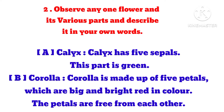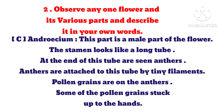B. Corolla — the corolla is made up of 5 petals which are big and bright red in colour. The petals are free from each other. C. Androecium — this part is the male part of the flower. The stamen looks like a long tube. At the end of this tube, anthers are seen. Anthers are attached to this tube by tiny filaments. Pollen grains are on the anther; some of the pollen grains can stick to the hands.